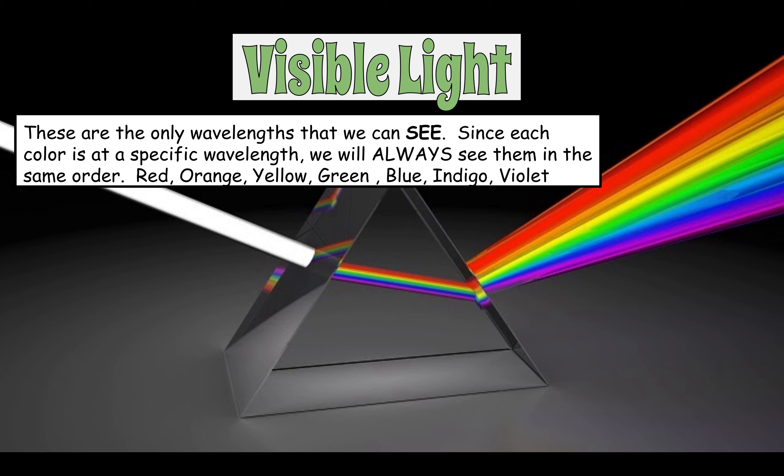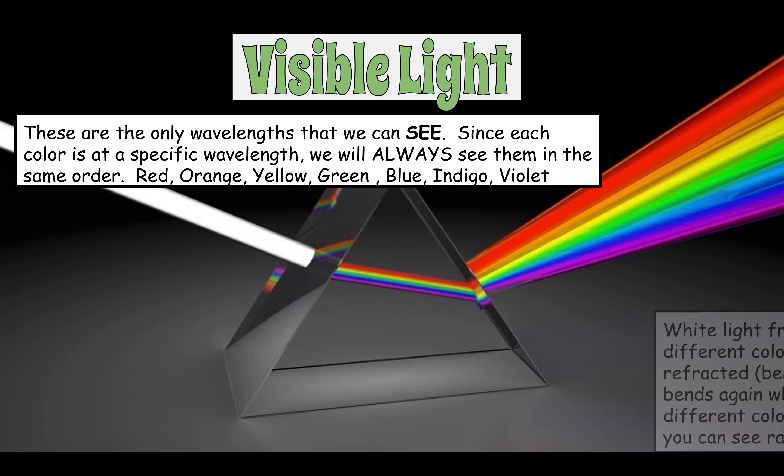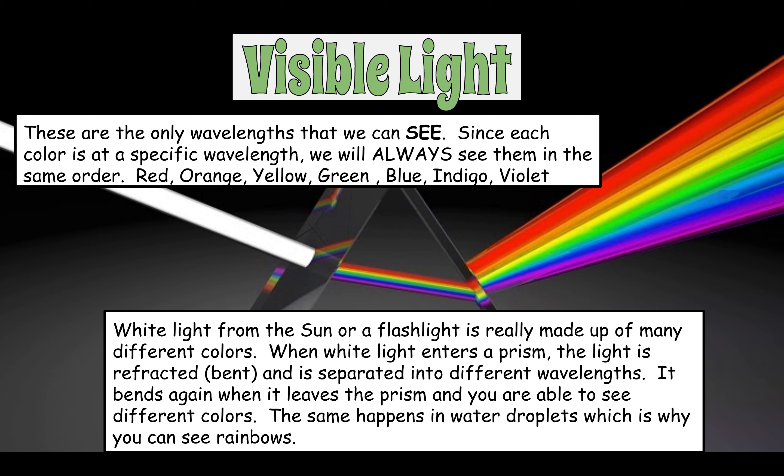You will always see these colors in this order when they refract from white light. The colors that you see we know as the colors of the rainbow, because the same thing that happens with a prism is the same thing that happens with droplets of water. When white light shines through the water, it refracts, and you get the visible light spectrum — and we call it a rainbow.